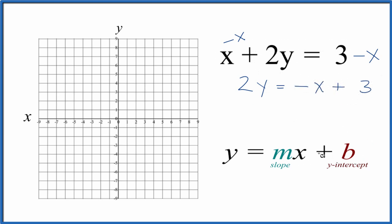So now we have it in slope-intercept form, almost, because we have 2y. So we actually have to divide both sides by 2. That'll get y by itself.